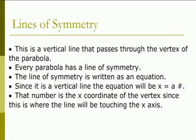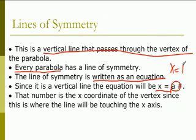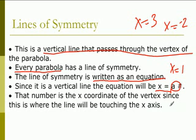Parabolas have lines of symmetry. This is the vertical line that passes through the vertex of the parabola. When you draw a line through the vertex, that's the line of symmetry, which means both sides of the parabola are the same. Every parabola has a line of symmetry. The line of symmetry is written as an equation, and since it's a vertical line, the equation will always be x equals a number — such as x equals 1, x equals negative 2, or x equals 3. That number is the x-coordinate of the vertex.